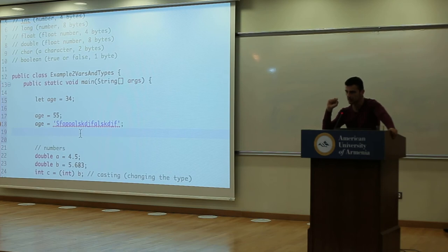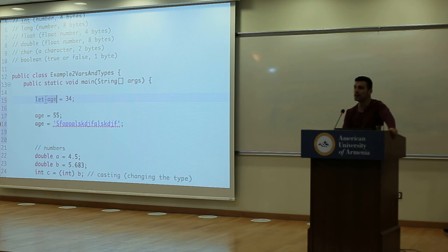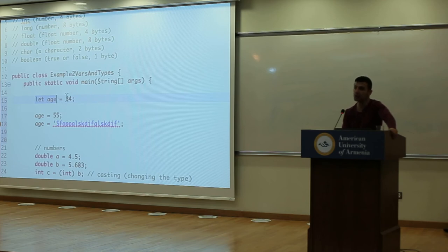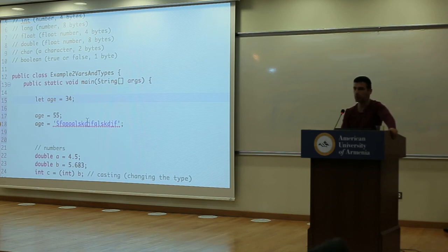Dynamic typing is why, when you create a variable in JavaScript, you don't say what type it is — the type is determined by the value. If the value is a number, it's a number; if it's a string, it's a string.